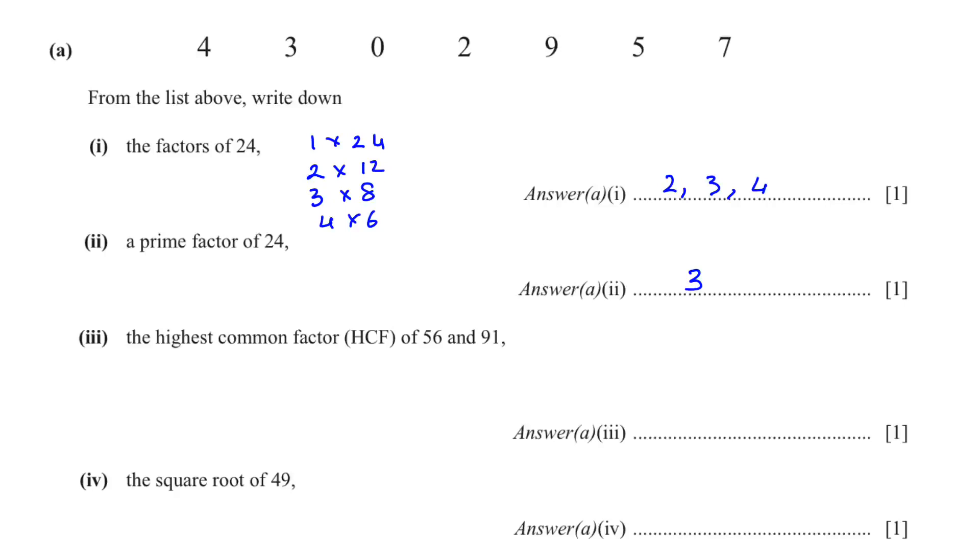The highest common factor of 56 and 91. Write down the factors of 56: 1 times 56, 2 times 28, 4 times 14, and 7 times 8. And the factors of 91. 91 is a prime number, so we will only have 1 times 91. So what is the highest common factor? 1.